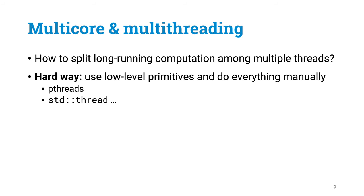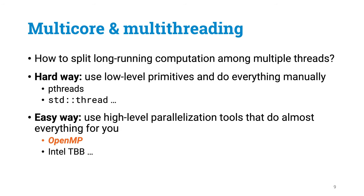Now how do we split our computation among multiple threads? The obvious answer is that you can create multiple threads using the low-level primitives in your programming environment, and then write some code in which threads communicate with each other and coordinate work-sharing. That's a lot of work, and easy to make mistakes. However, there are much easier tools available. OpenMP makes work-sharing among multiple threads so easy that it almost feels like cheating.